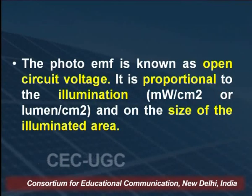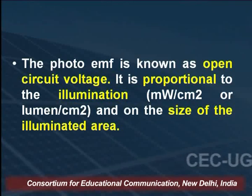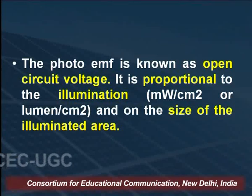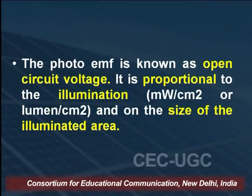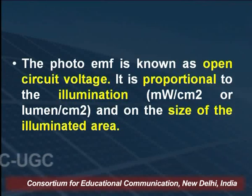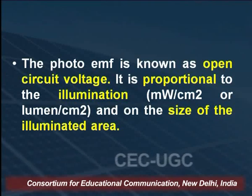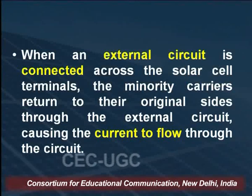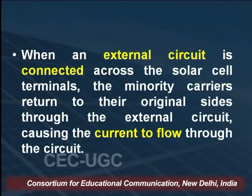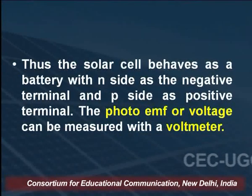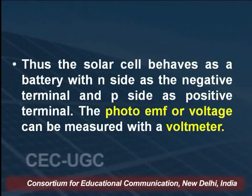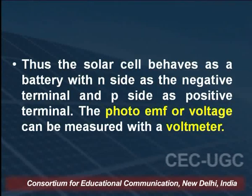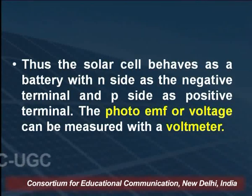The photo EMF is also known as the open circuit voltage, and it is proportional to the illumination — it depends upon the intensity of the light source and on the size of the illuminated area. When the external circuit is connected across the solar cell terminals, the minority carriers return to their original side through the external circuit, causing current to flow. The solar cell then behaves as a battery, with the N side as the negative terminal and the P side as the positive terminal, and this photo EMF can be measured with a voltmeter.